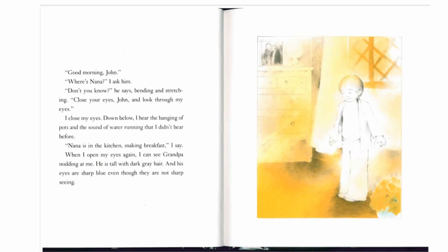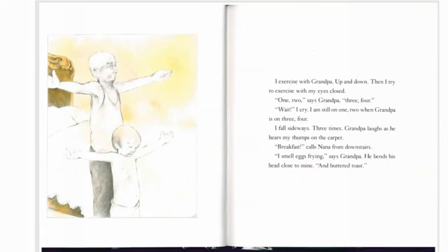He is tall with dark grey hair and his eyes are sharp blue, even though they are not sharp seeing. I exercise with grandpa, up and down. Then I try to exercise with my eyes closed. One, two, says grandpa. Three, four. Wait, I cry. I'm still on one, two when grandpa's on three, four. I fall sideways. Three times. Grandpa laughs as he hears my thumps on the carpet.